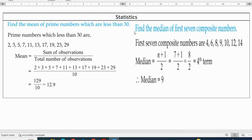Statistics: find the mean of prime numbers which are less than 30. Mean is sum of observations by number of observations. Prime numbers less than 30 are 10 observations, divided by 10, answer is 12.9. Find the median of first 7 composite numbers: 4, 6, 8, 9, 10, 12, 14. The number in the middle is the median. First arrange in ascending order.